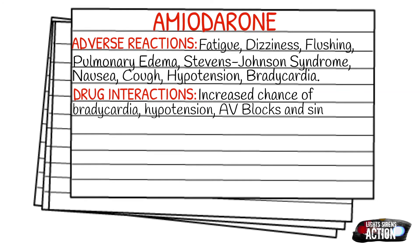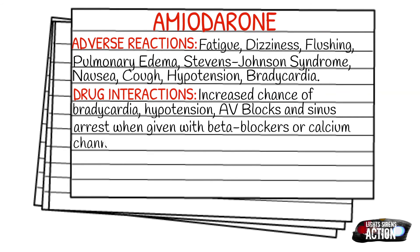As for how it's supplied, amiodarone is typically 150 milligrams in a 3 ml dark vial.